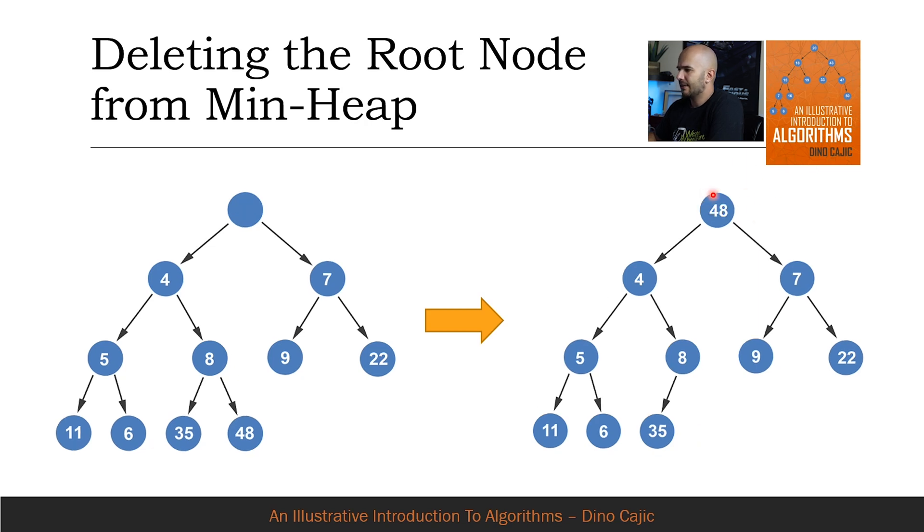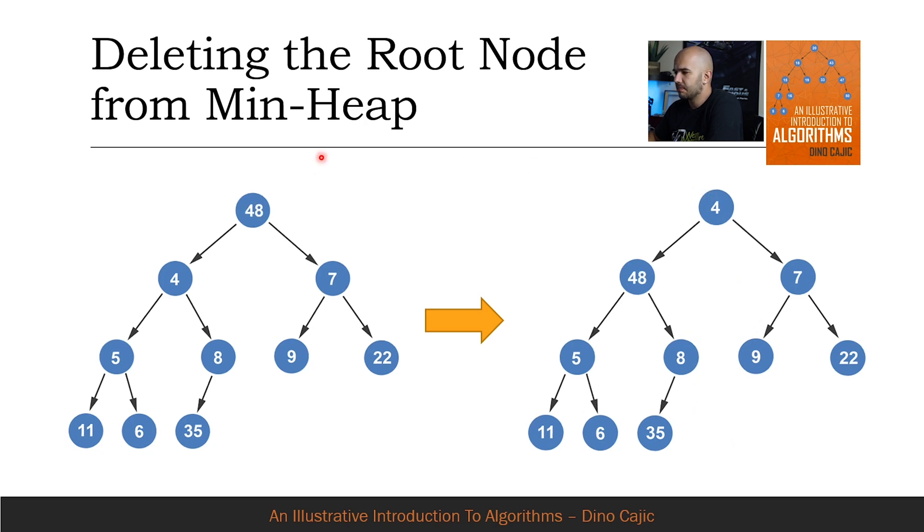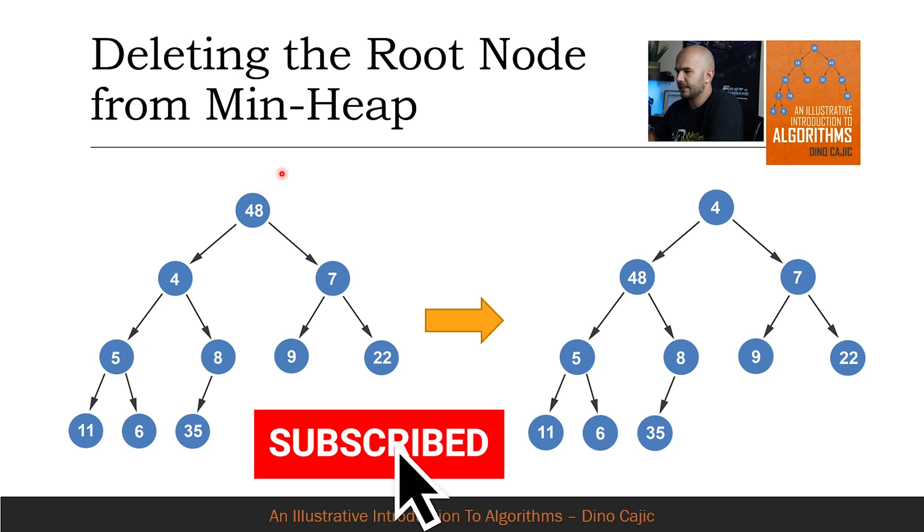When deleting the root node, the last node becomes the new root node. So here's the last node that gets moved up. As you can see, going from here to here, it's not copied. It's deleted from this section and then moves up. The root node might not be in the correct spot on the minheap since 48 is larger than its children and needs to trickle down into the correct position.